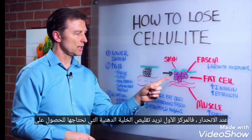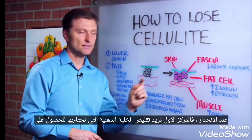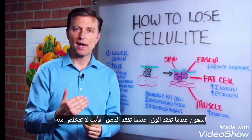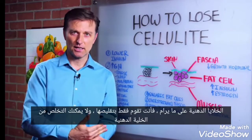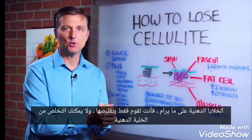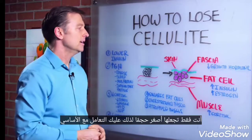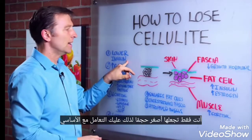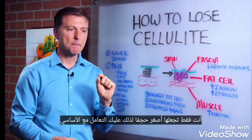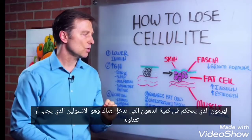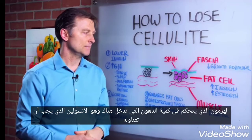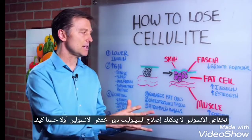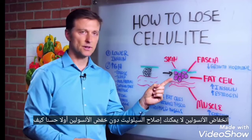Number one, we want to shrink the fat cell — we need to get the fat out. When you lose weight, when you lose fat, you're not getting rid of the fat cell — you're just shrinking them. You can't get rid of your fat cells. To do that, you have to deal with the main hormone that controls how much fat goes in there, and that's insulin. You have to lower insulin. You cannot fix cellulite without lowering insulin first.